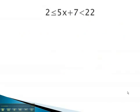In this first problem, we have 5x plus 7 between the numbers 2 and 22. To begin isolating the variable, we will subtract 7 from all three parts: left, right, and center of the inequality.